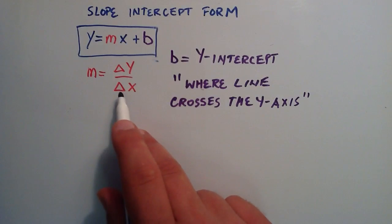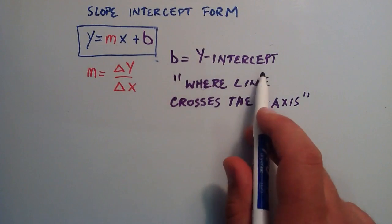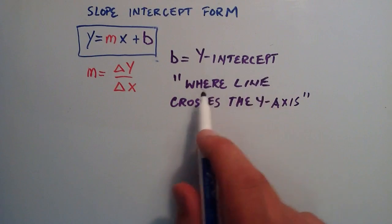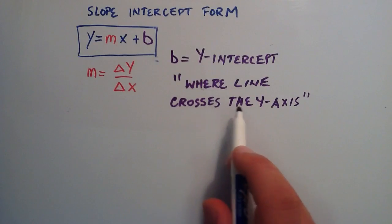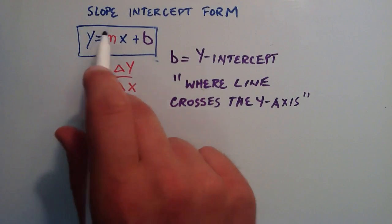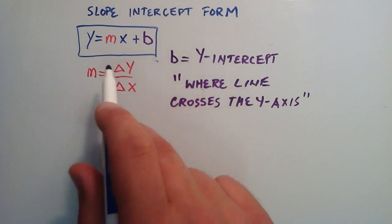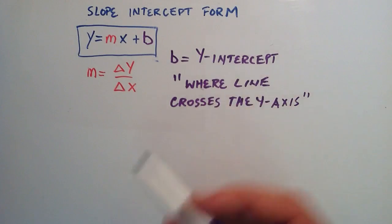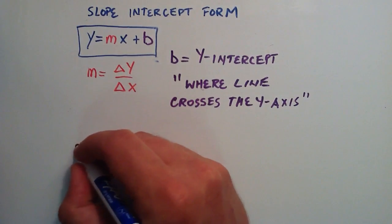And b is the y-intercept, and the y-intercept pretty much tells us where the line crosses the y-axis. So with these two bits of information in the slope-intercept form, we can tell everything about the line. Let's go ahead and show you an example of this.